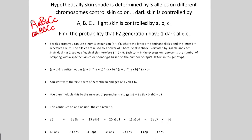The question from this example is: we need to find the probability that the F2 generation will have one dark allele — one capital letter — while the rest will be lowercase letters, giving a particular light shade.